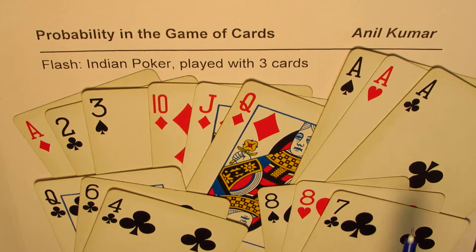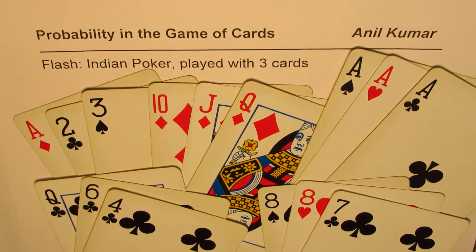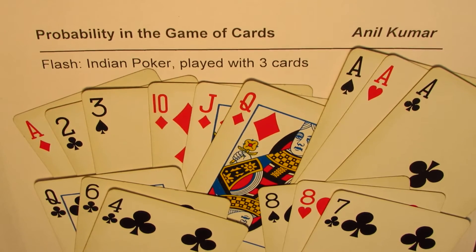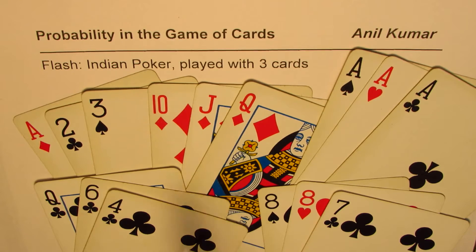We have some combinations: we could get three of one kind, like three aces, which is considered the highest. We could have a color sequence like 10, Jack, Queen, or a normal sequence like Ace, 2, 3. We could have a pair like two eights with a different card, or three cards of the same suit — for example, all three from clubs. The order of winning from highest is: trail, then color sequence, then sequence, then color, then pair.